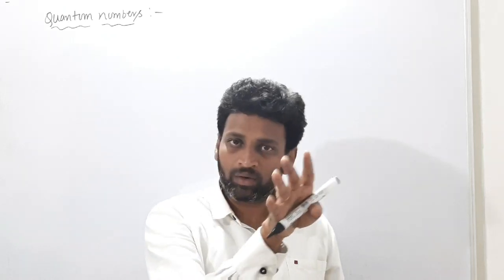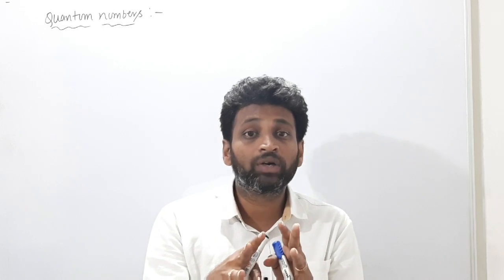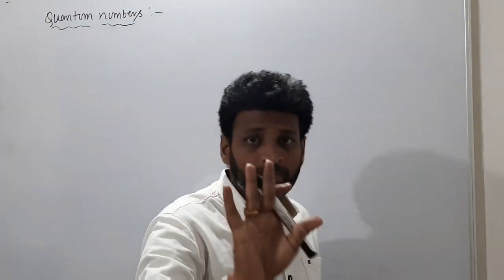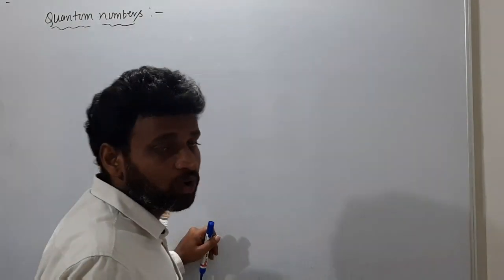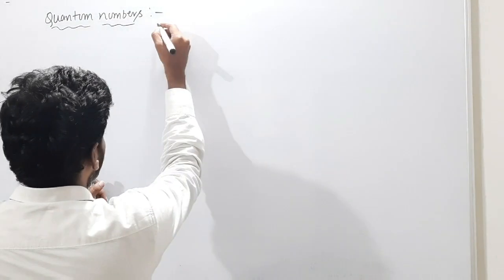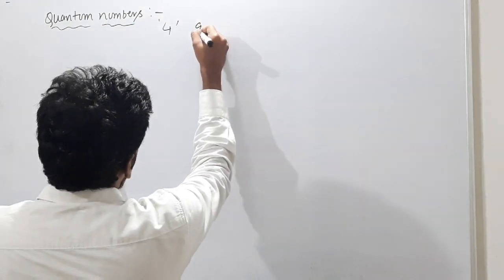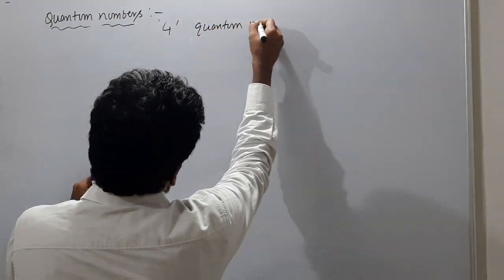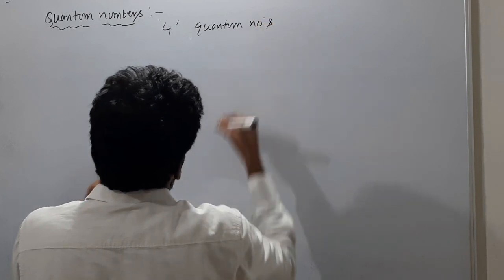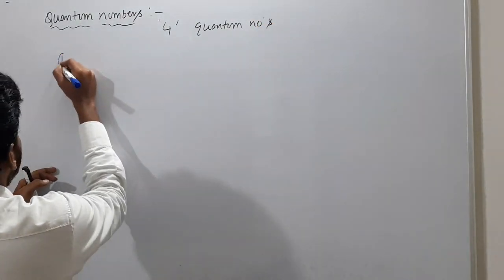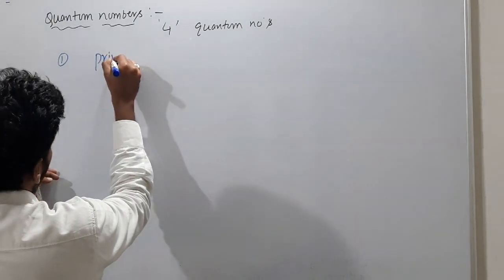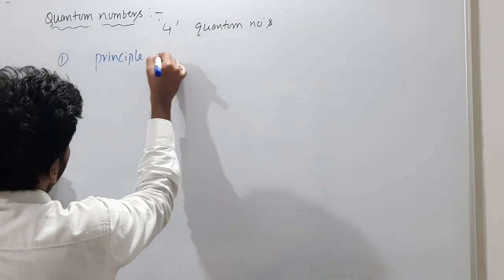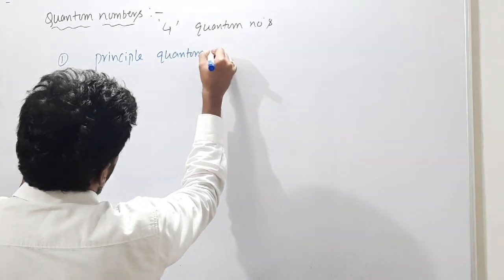There are four quantum numbers. Some students may have studied these already as basics — this is a recap. Old students, please treat it as revision. New students, listen carefully. How many quantum numbers are there? Four quantum numbers.